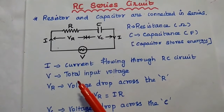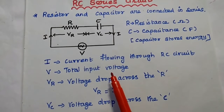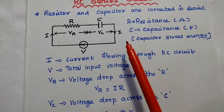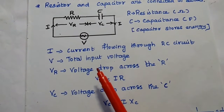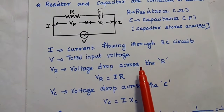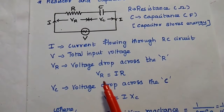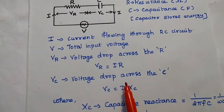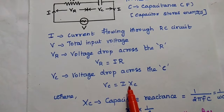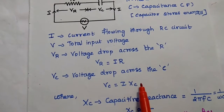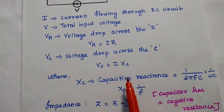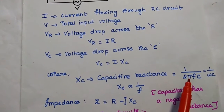Here I represents the current flowing through the RC circuit, and V is the total input voltage to the circuit. Since the voltage is divided, the voltage drop across the resistance is Vr = I × R, and the voltage drop across the capacitance is Vc = I × Xc, where Xc is the capacitive reactance, equal to 1/(2πfc).